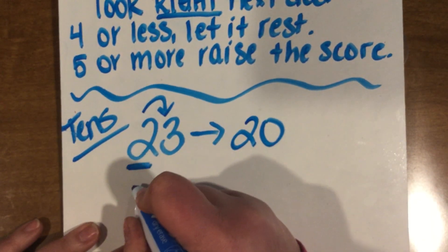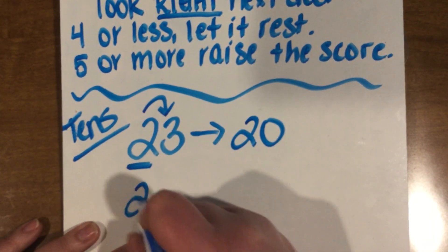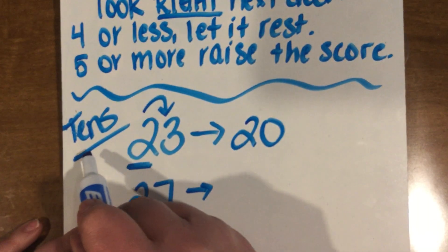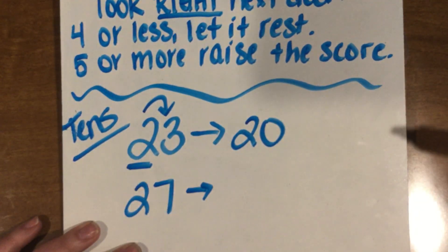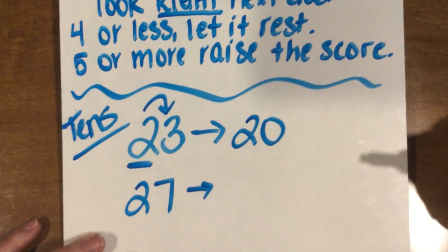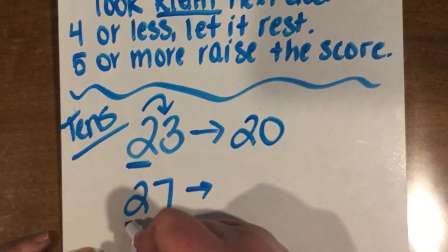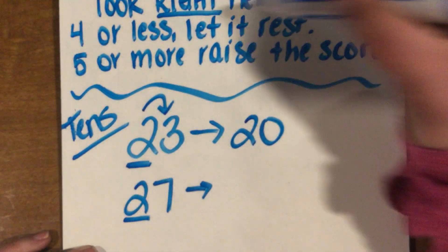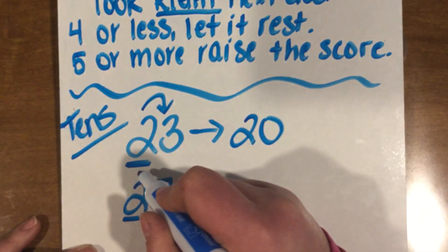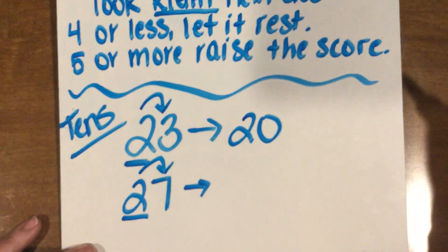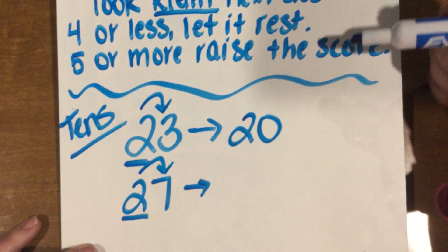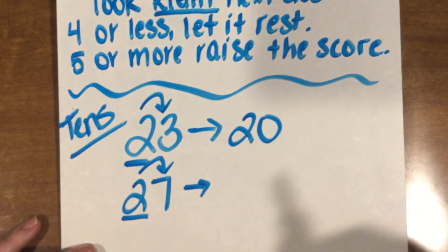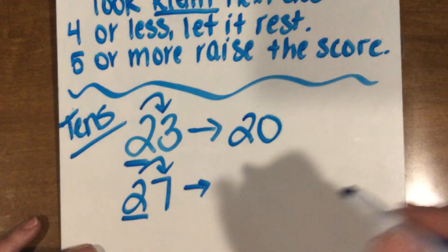Let's look at a different case. If I have the number 27, and I'm rounding to my nearest tens place, what number is in my tens place? Two, right? So then I'm going to look right next door. Is it four or less, or is it five or more? Seven is five or more.